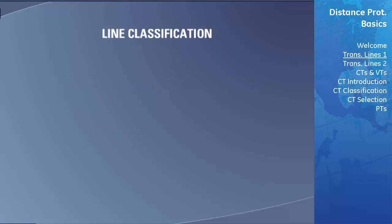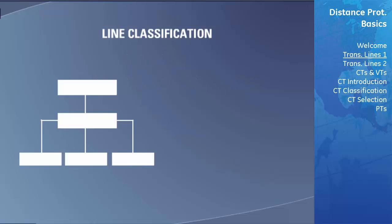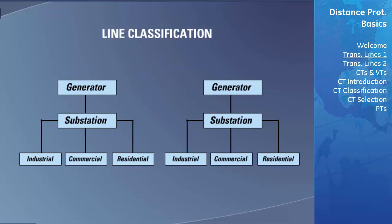Parallel lines describe a configuration where multiple transmission lines run side by side. This is done to transmit large amounts of power from one location to another and to have redundant paths for current in case one of the lines were shut down due to a fault.